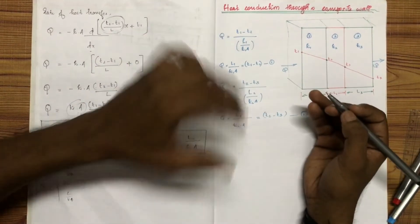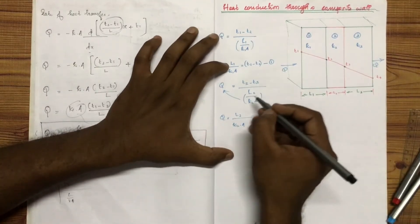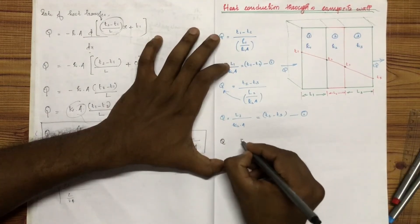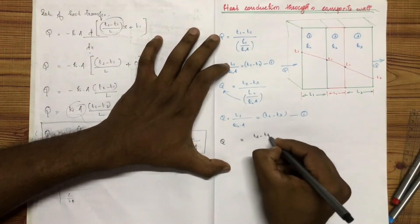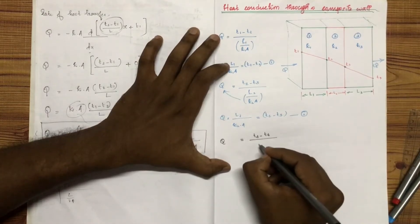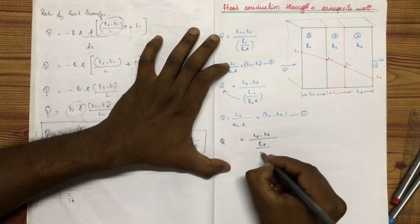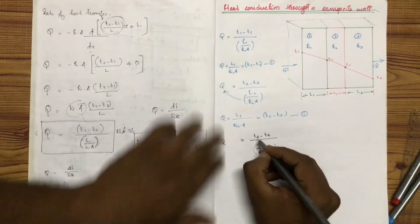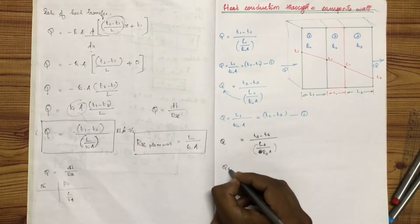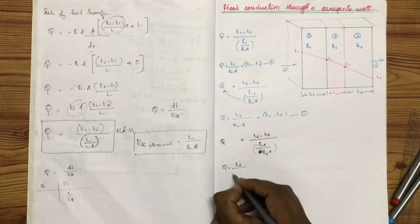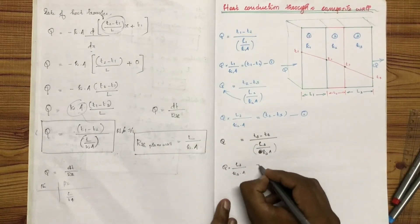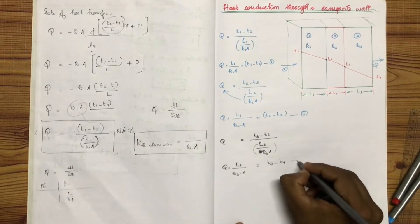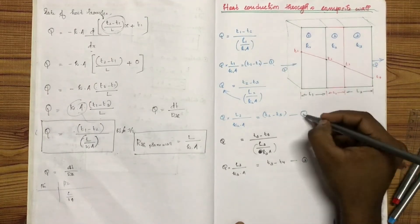The next expression: T3 minus T4 divided by L3 divided by K3 into A. So Q into L3 divided by K3 into A equals T3 minus T4. This is equation number 3.